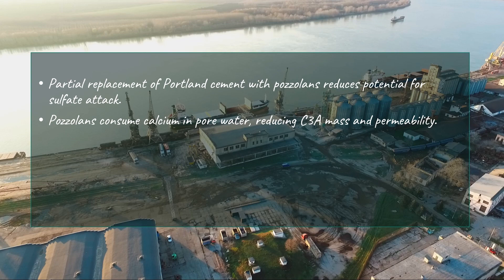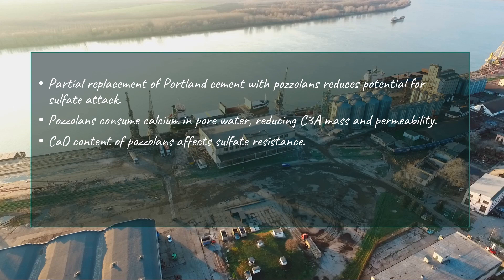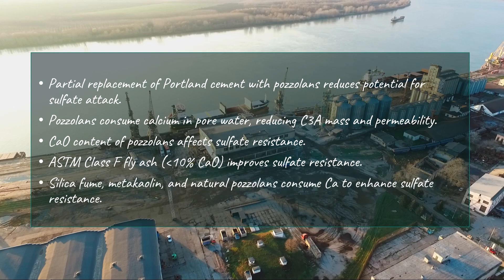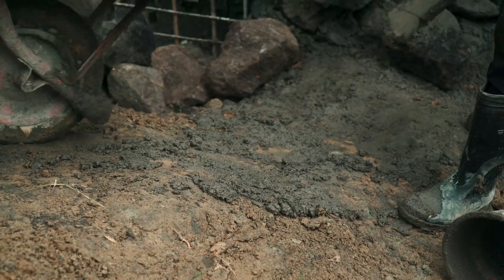These pozzolans consume the calcium in the pore water, reduce the total mass of C3A content, and decrease the permeability. When deciding which pozzolan to choose for sulfate-resisting concrete, it is important to consider its calcium oxide content — the CaO content. A high percentage of CaO in fly ash may substantially accelerate the sulfate problem. For instance, ASTM Class F fly ash with less than 10% CaO will certainly improve the resistance of concrete to sulfate attack. Similarly, silica fume, metakaolin, and various natural pozzolans consume calcium to improve sulfate resistance.